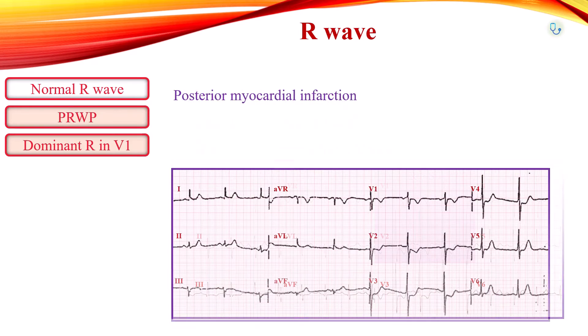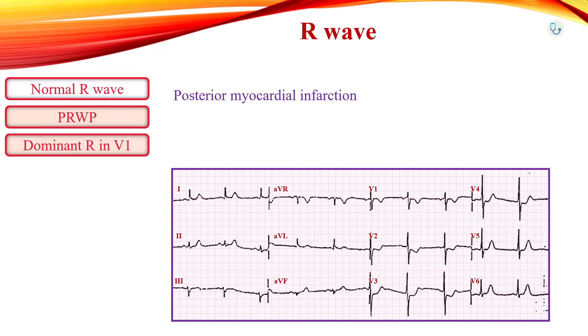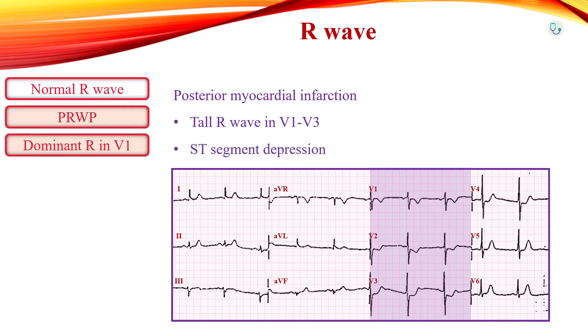In posterior myocardial infarction, decreased muscle mass in the left side of the heart decreases the leftward vector. Higher amplitude rightward depolarization can be seen as a tall R-wave in right precordial leads. Tall R-wave in V1 to V3 and horizontal ST-segment depression mirror the Q-wave and ST-segment elevation seen in posterior leads.